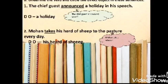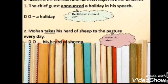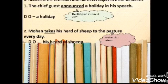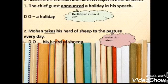Let's solve some questions from exercise B: underline the verb and circle the direct object. First: 'The chief guest announced a holiday in his speech.' The verb is 'announced.' The chief guest announced what? A holiday. So the direct object is 'a holiday.' Second: 'Mohan takes his herd of sheep to the pasture every day.' The verb is 'takes.' Mohan takes whom? His herd of sheep. So the direct object is 'his herd of sheep.'